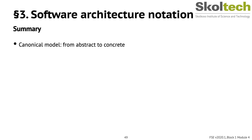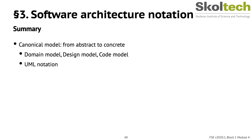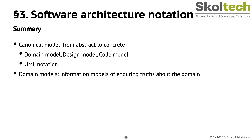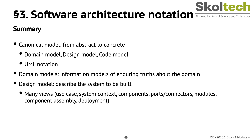In summary, canonical models go from abstract to concrete — from the domain through the design all the way to the code model — and typically use UML notation. Domain models are information models of enduring truth about the domain. Design models describe the system to be built and are typically represented in many views such as use case, system context, or deployment diagrams. We commonly reason with components and connectors to more systematically represent our knowledge about the system design.